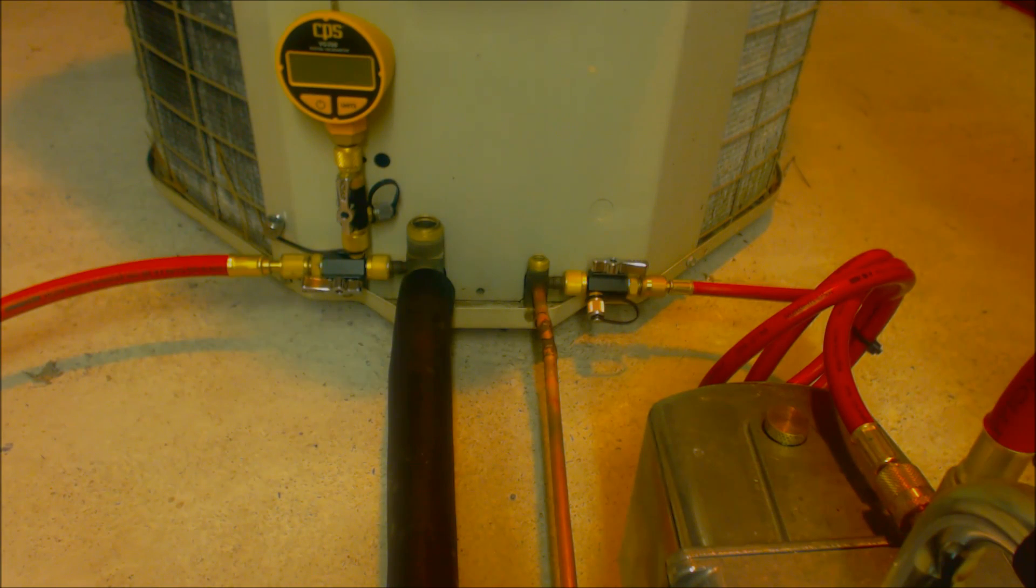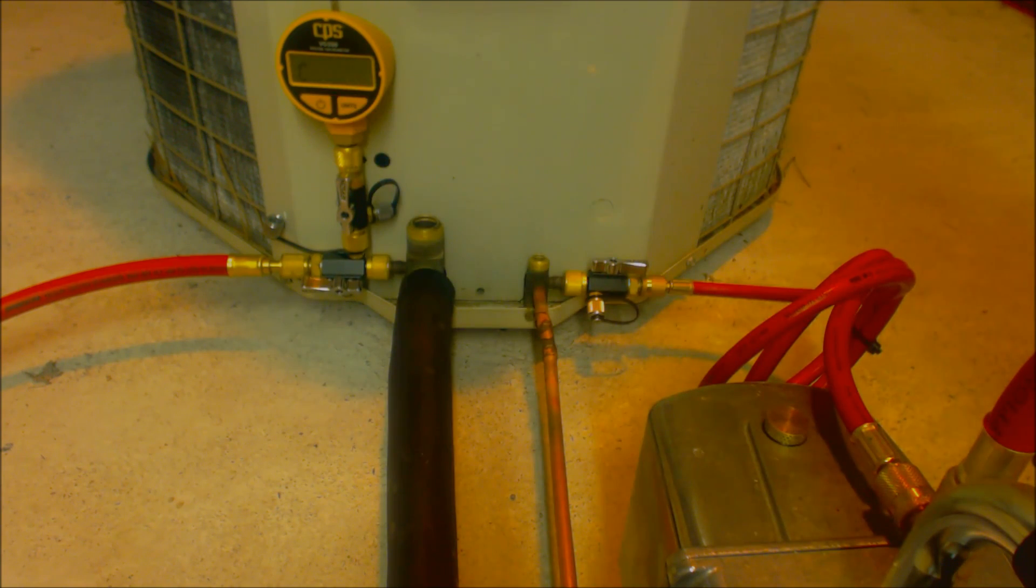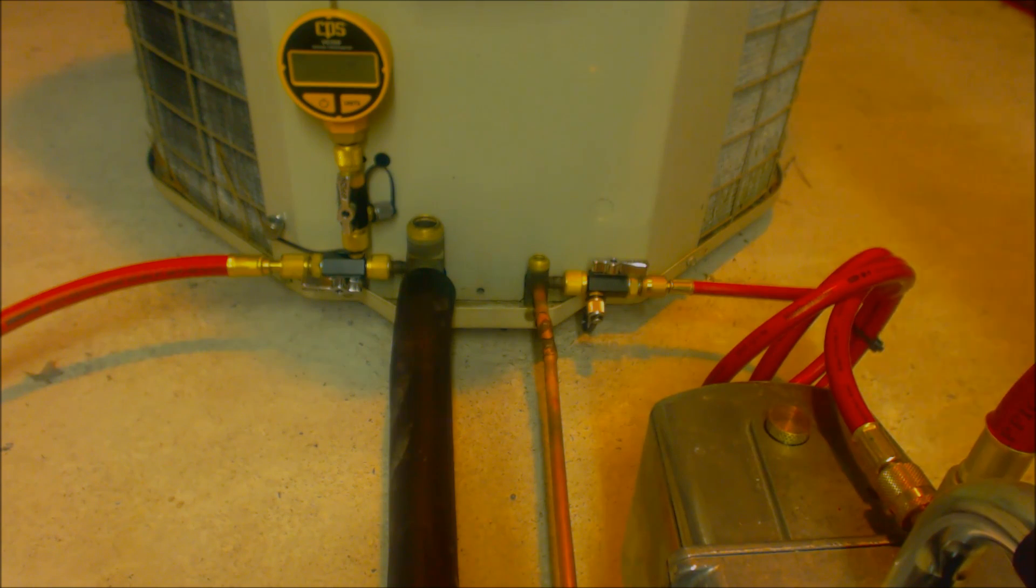We'll go ahead and turn on our micron gauge, and then we'll turn on our vacuum pump. Make sure it's set for microns. It's going to take the vacuum pump just a little bit of time in order to pull deep enough vacuum for the micron gauge to be able to read it. And there it goes. It's going to pull it fast until it gets down low, and then it's going to go slower, so we're going to go ahead and speed it up. We have a fast forward coming up.